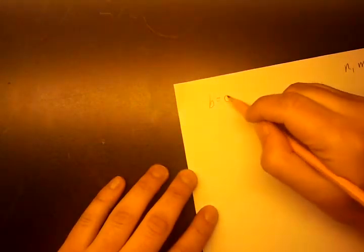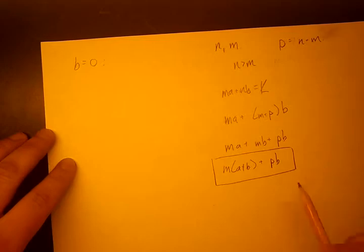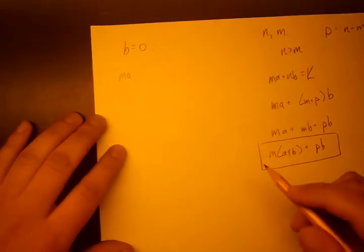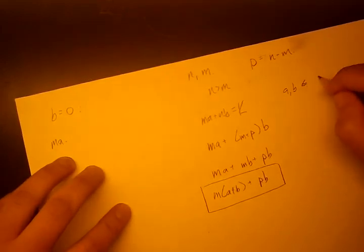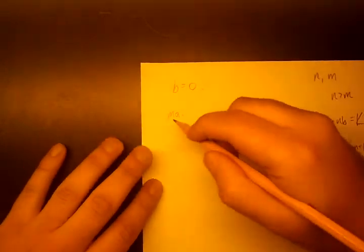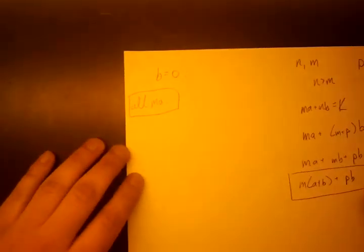So first we let b equal zero. Let's do that. Let's say b equals zero. That's our case number one. So if b equals zero, then you just get m·a. And a can be any number because we said a and b are natural numbers. So we can form all m·a.